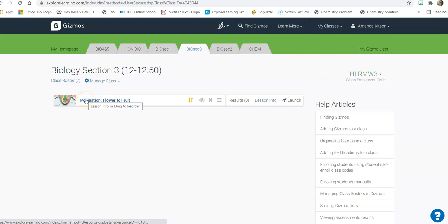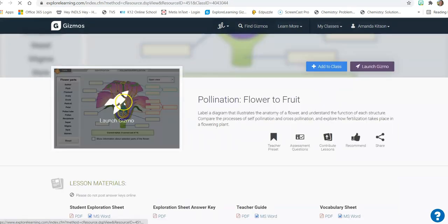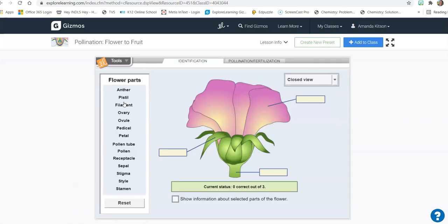So once you log in, go to pollination, flower to fruit, launch the gizmo. And I'm going to go through the gizmo for you here. But you can also open it up on your own screen and follow along as I do the gizmo.